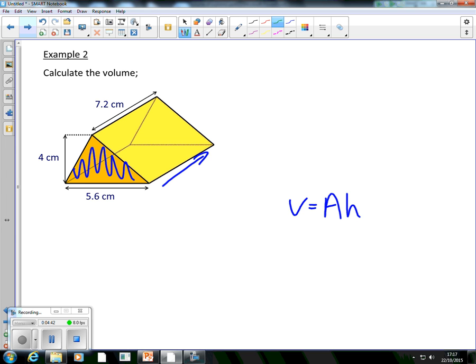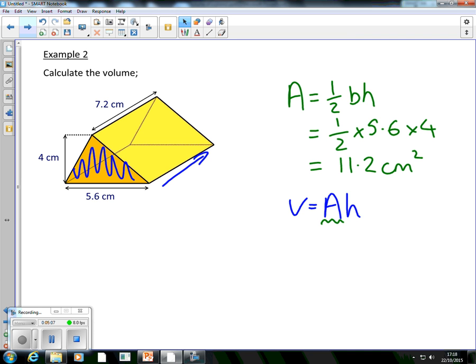To find the volume, I'm going to do V equals the area of that cross section multiplied by the height. We don't know the area, so that area is what we have to find. Now, if it's a triangle, we know how to find the area of a triangle. It's half base times height. Here, the base is 5.6 and the height is 4, which is going to give us an answer of 11.2 cm squared. Area is two dimensional, so centimeters squared.